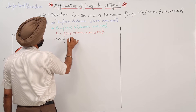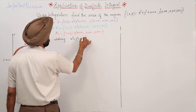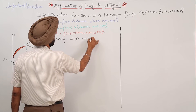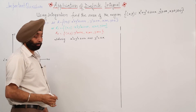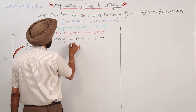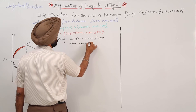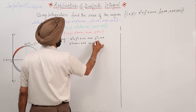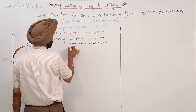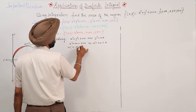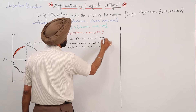Now solving x² + y² = 2ax and y² = ax simultaneously: substituting y² = ax gives x² + ax = 2ax, so x² - ax = 0, which means x(x - a) = 0. This gives x = 0 and x = a.